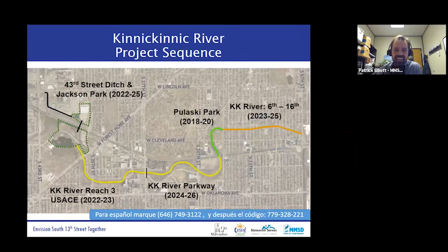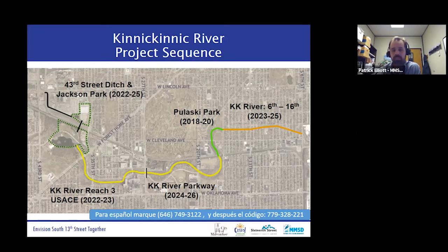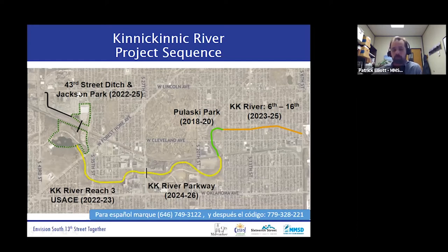We have a number of different projects to remove over three miles of concrete channel lining just on the Kinnickinnic River alone and to address flood risk. We have to construct these projects in a certain order so that we're not increasing flood risk. The 6th to 16th Street project is at the bottom of the funnel, and the recommendation is to make that area wider. But we can't do that until we hold back some of the water in the Jackson Park area, because opening up the bottom of the funnel without holding back water upstream would actually make flood conditions worse for people downstream.